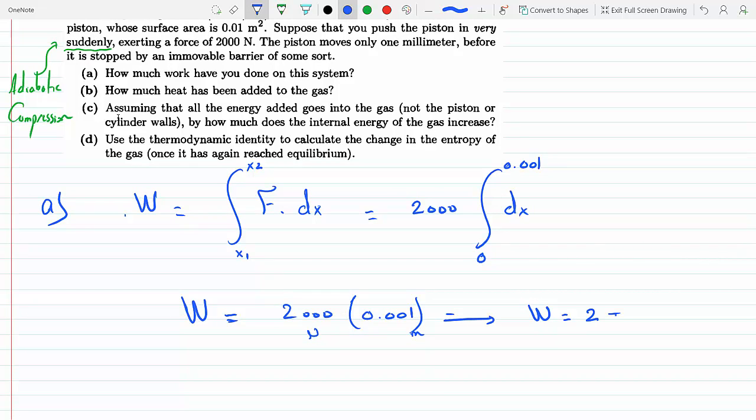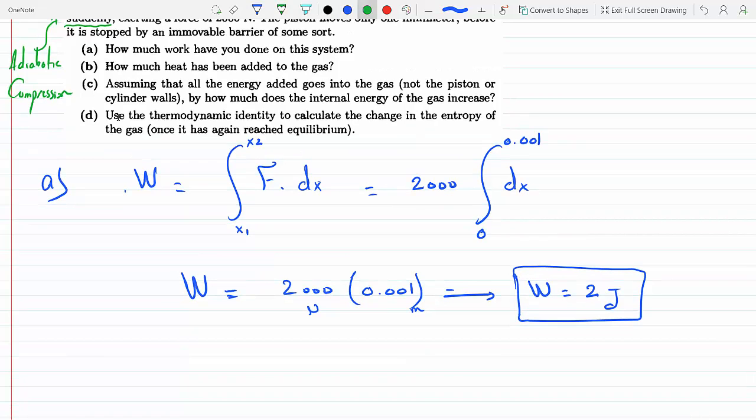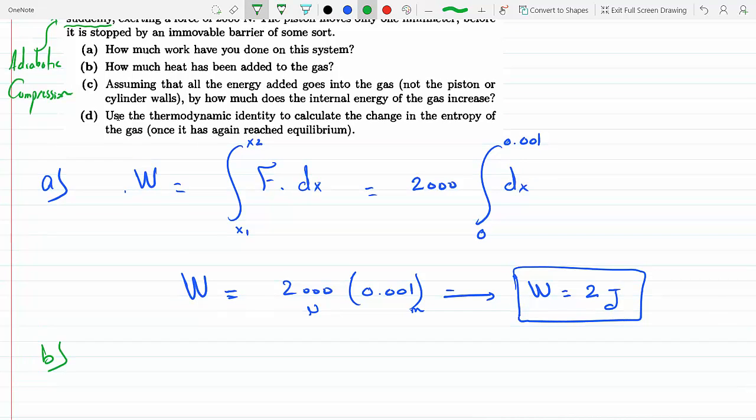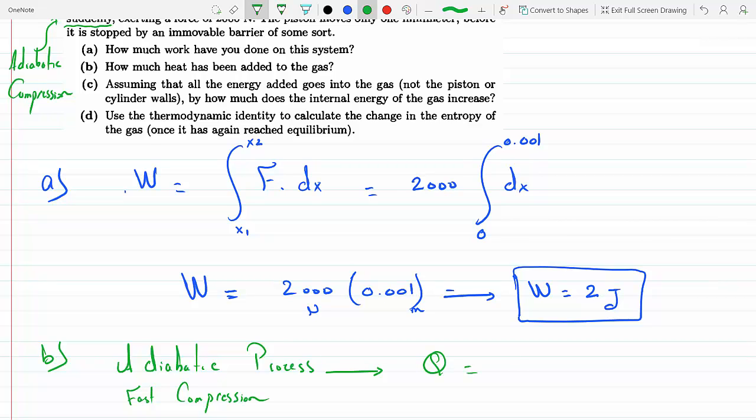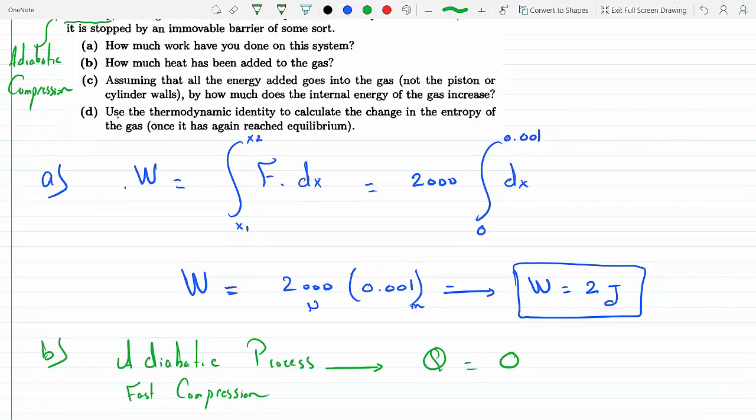For part B, it says how much heat has been added to the gas? Well, again, this is an adiabatic process, and since there's no exchange of heat between the system and the surrounding because this is a fast compression - that's because we have a fast compression as we've learned before - Q has to equal zero.